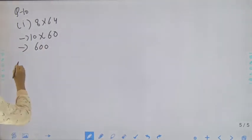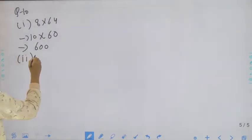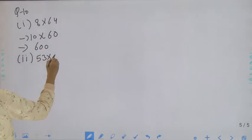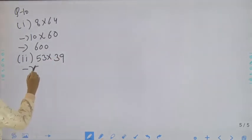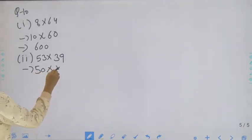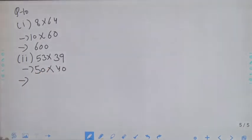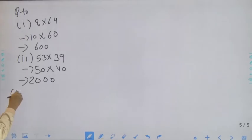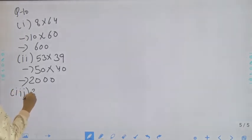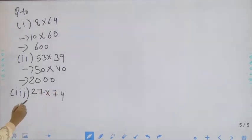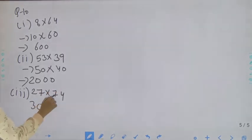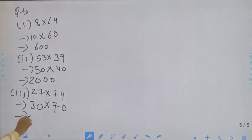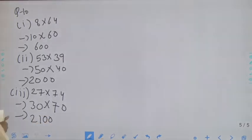Now move to the second part: 53 into 39. So 53 will round up to 50 and 39 will round up to 40. 50 into 40 it will be 2000. Now move to the third part: 27 into 74. 27 rounds up to 30 and 74 rounds to 70. 7 threes are 21, and two zeros — it will be 2100. Now move to the fourth part.